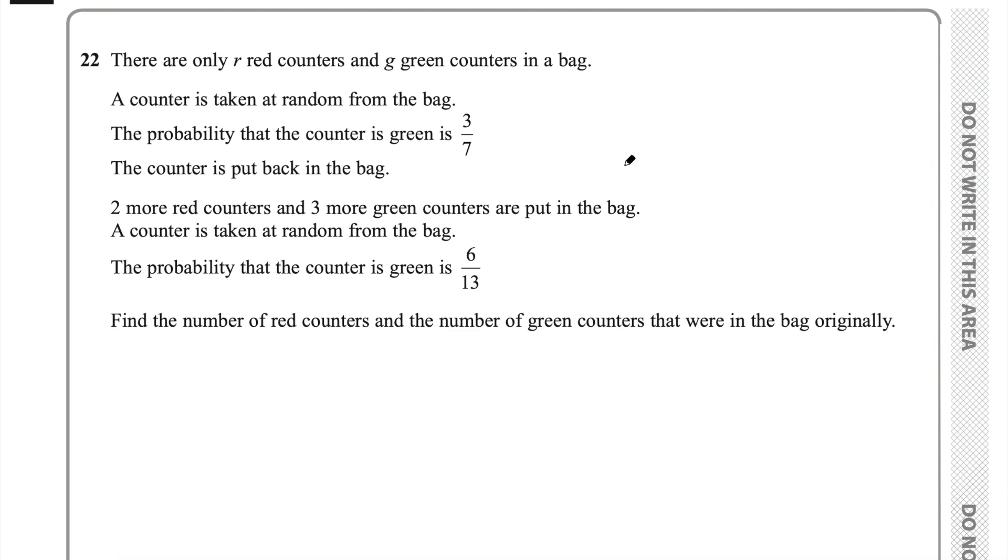There are only R red counters and G green counters in a bag. A counter is taken at random from the bag. The probability that the counter is green is 3 over 7. The counter is put back in the bag. Two more red counters and three more green counters are put in the bag. A counter is taken at random from the bag. The probability that the counter is green is 6 over 13. Find the number of red counters and the number of green counters that were in the bag originally.